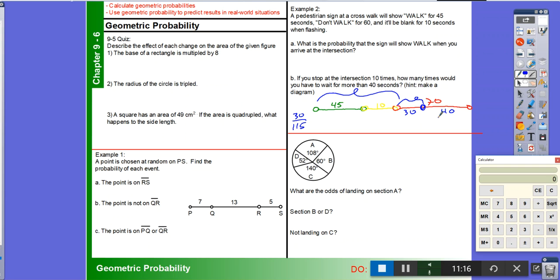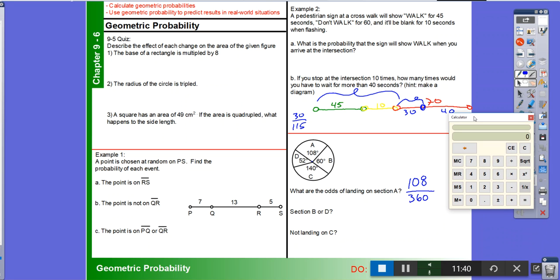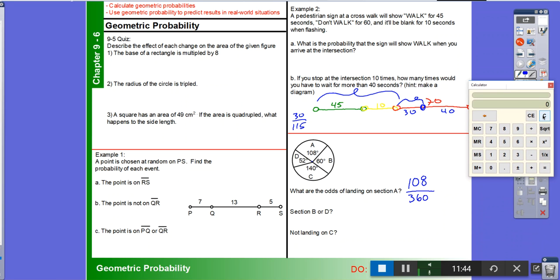So what are the odds of landing on Section A? We have a pie chart. Section A has 108 degrees. We're going to assume that's right smack dab in the middle. And so we have 108 degrees of Section A goodness out of a possible 360. So I can reduce this. 4 goes into both of them. 9 goes into both of them. So that's 3/10 of the time. So the odds that we will land in Section A should be 3/10.